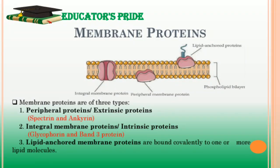Membrane proteins are basically of three types: peripheral proteins (or extrinsic proteins), integral membrane proteins (or intrinsic proteins), and lipid-anchored membrane proteins. Peripheral membrane proteins do not interact with the hydrophobic core of the phospholipid bilayer — for example, spectrin and ankyrin, which are common peripheral proteins in RBC membranes that help determine cell shape and flexibility. Integral membrane proteins have one or more segments embedded in the phospholipid bilayer and may be single-pass or multi-pass transmembrane proteins. For example, glycophorin is a single-pass transmembrane protein of RBC, and band-3 protein (chloride–bicarbonate exchanger) is a multi-pass protein on the RBC plasma membrane.